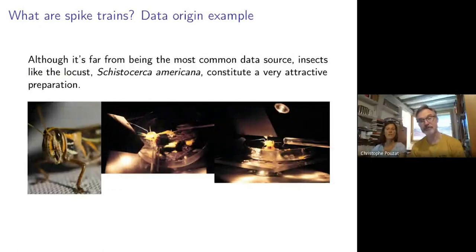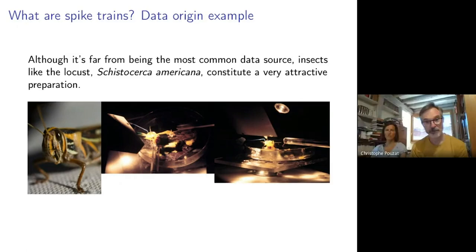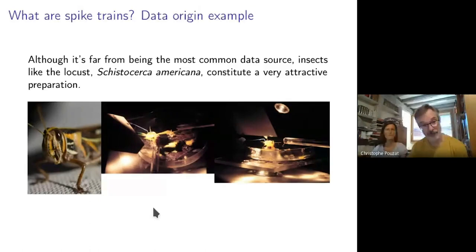Most of the time, people talking about extracellular recordings in neuroscience will show you pictures of a monkey or a rat or something that looks like a vertebrate. I started doing extracellular recordings on something much simpler: an insect you see on the left here, Schistocerca americana. That's a cousin of Schistocerca gregaria that you find in Africa, the one that is now eating lots of crops in Eastern Africa.